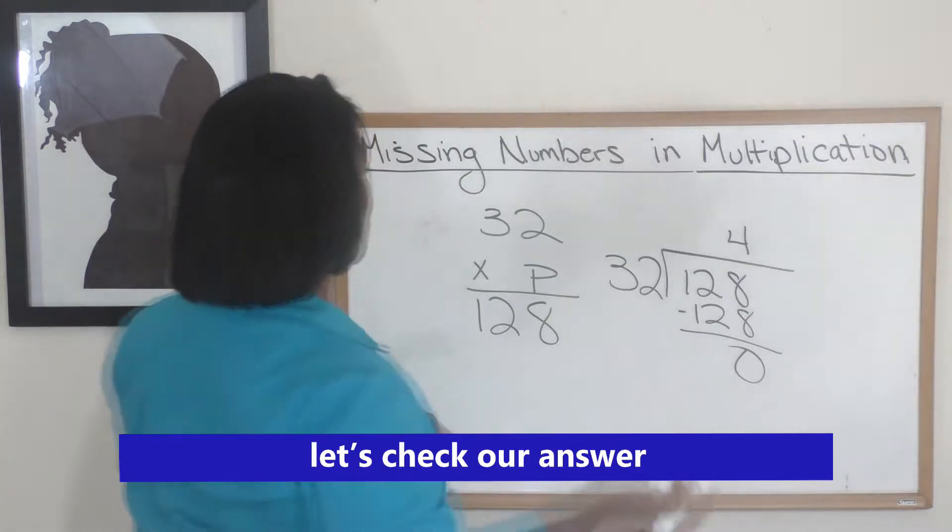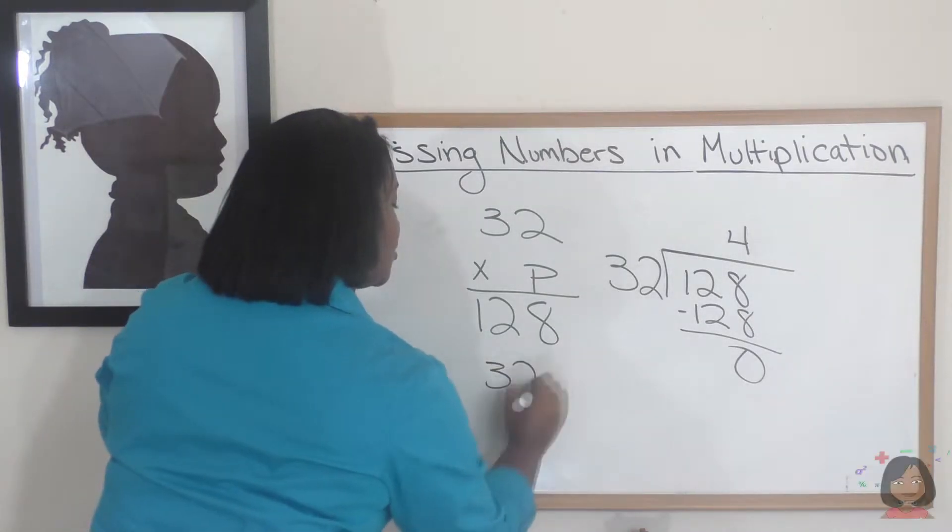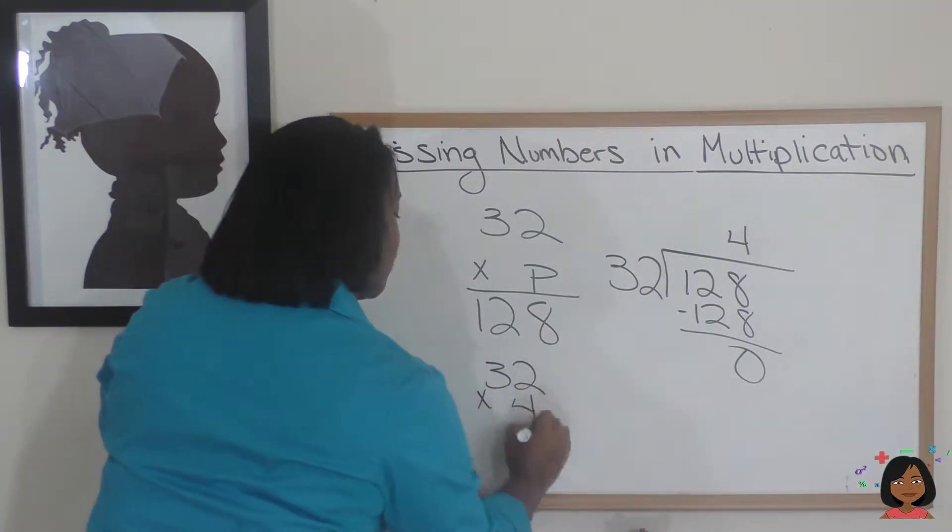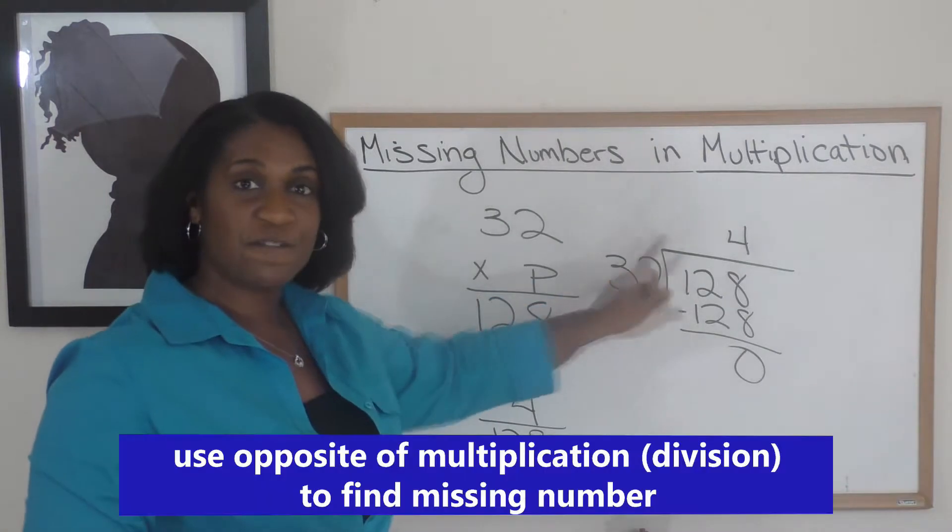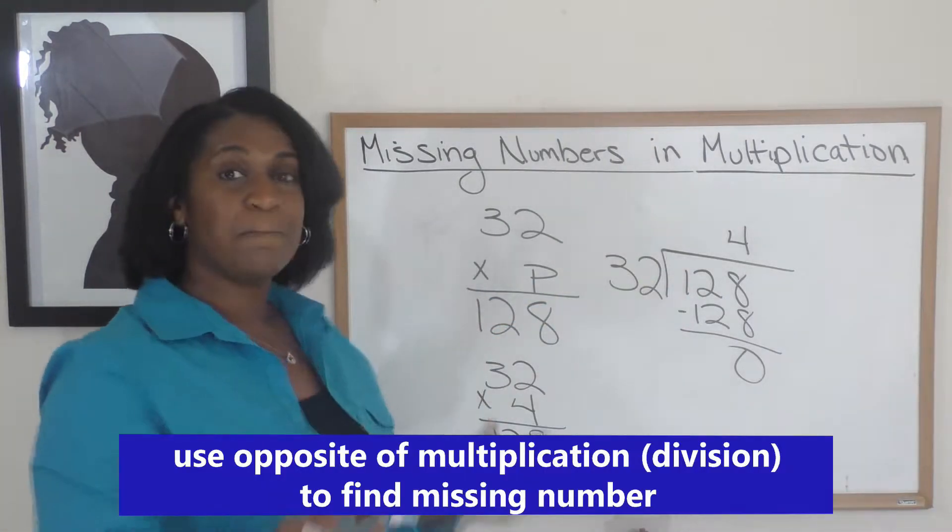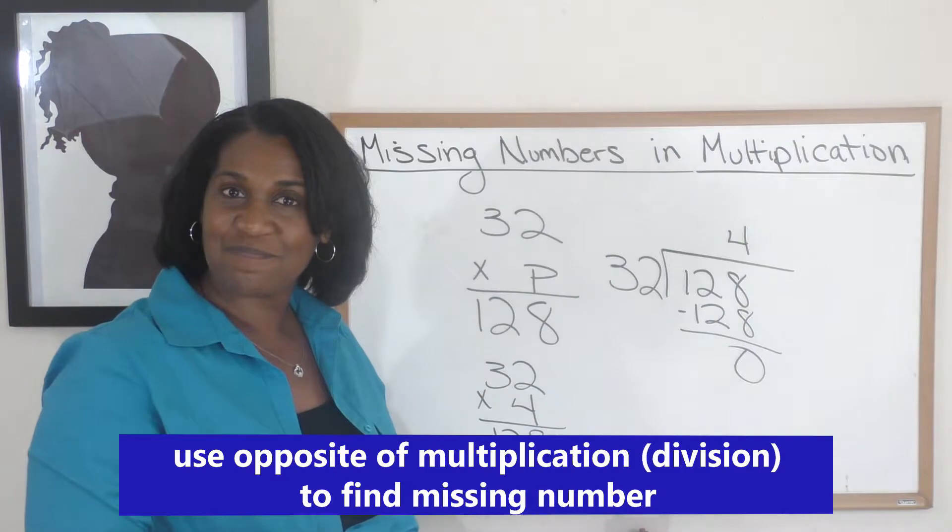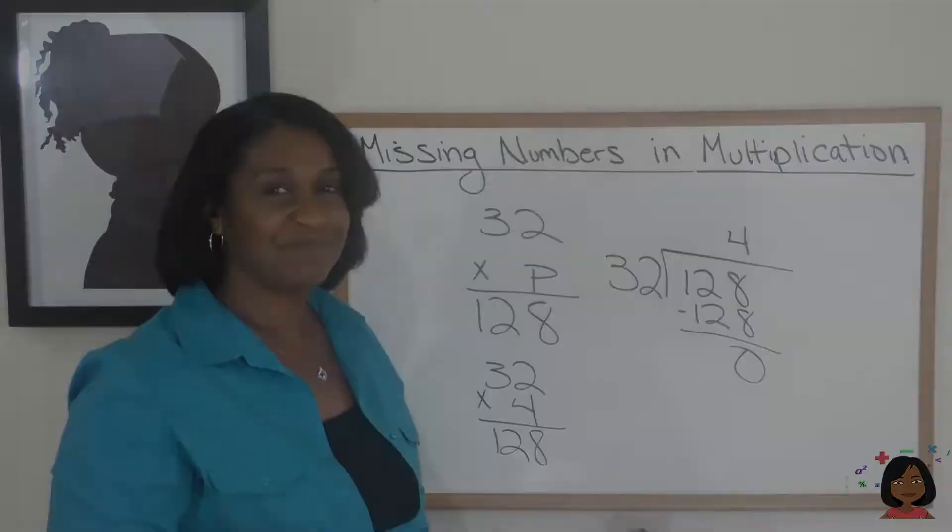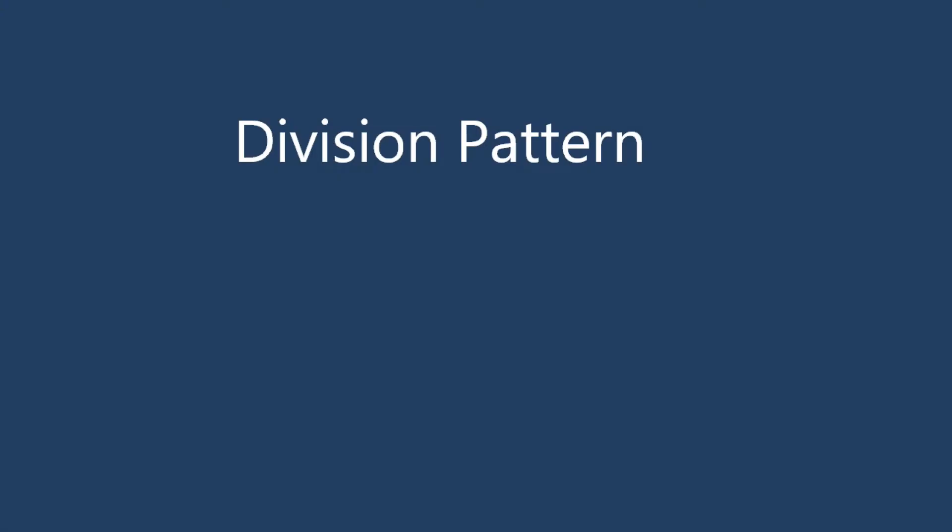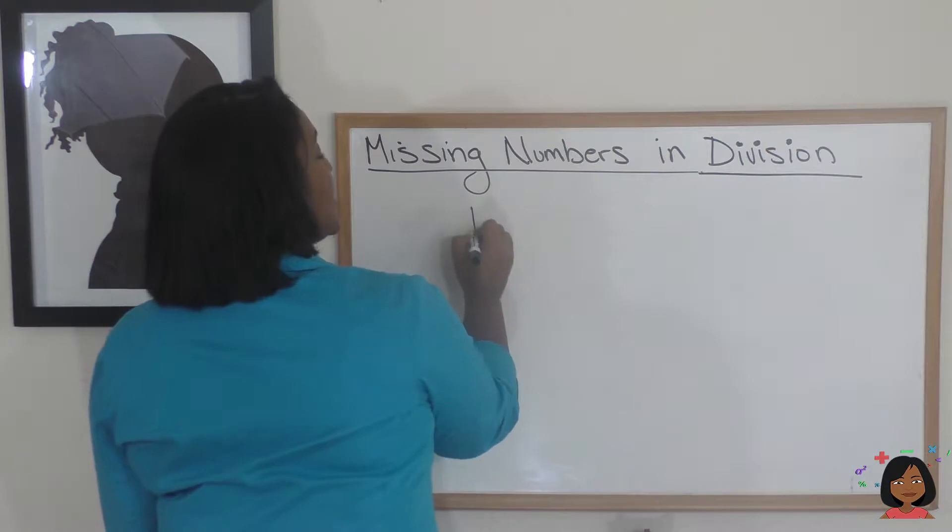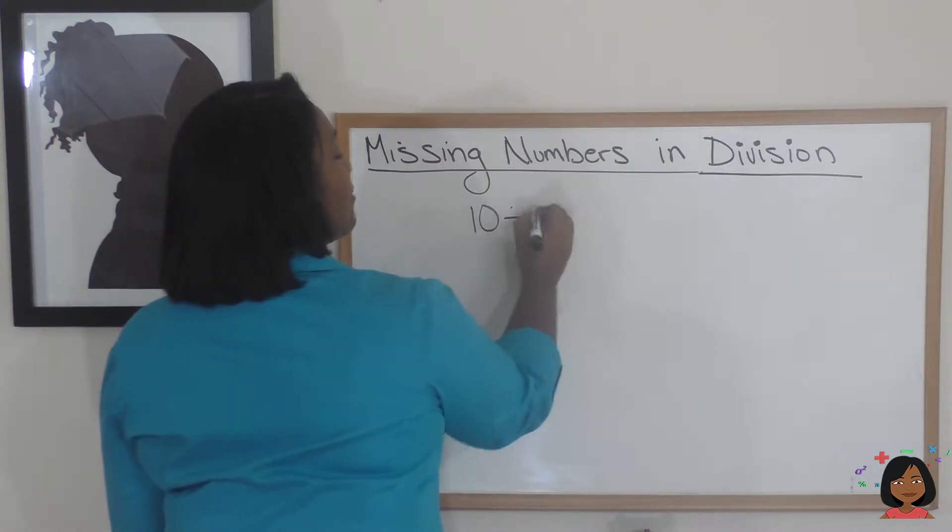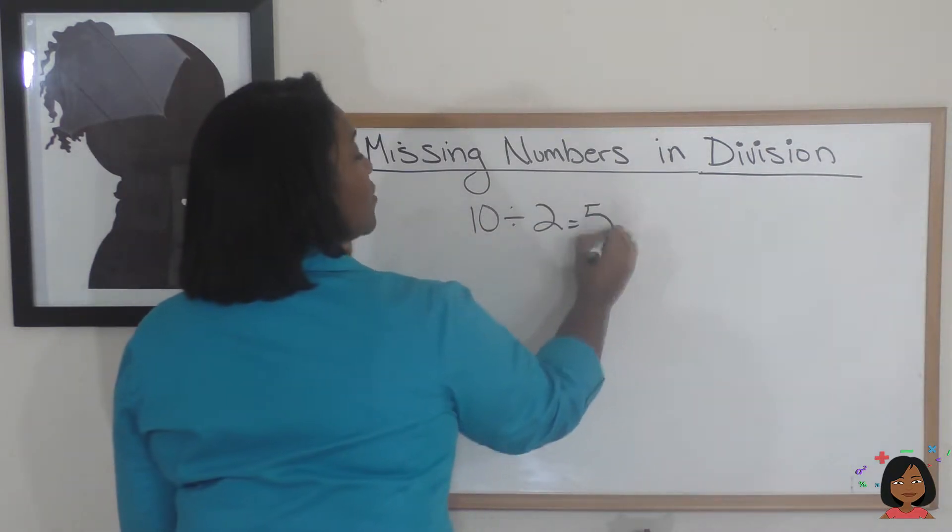There we go, our answer is 4. Let's check it: 32 times 4 is 128. So there you go, there's how we can use division to figure out missing numbers in multiplication. Pretty simple. Let's say we have the number 10 divided by 2 equals 5.